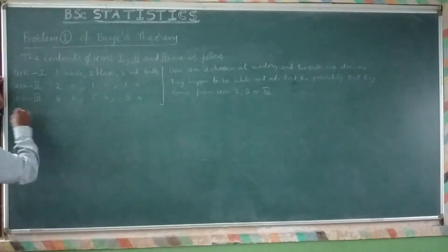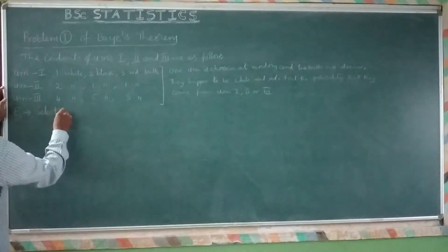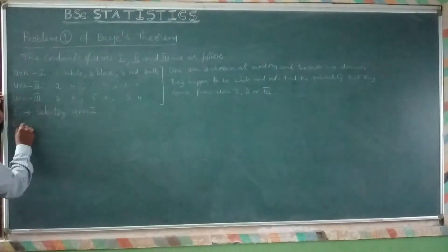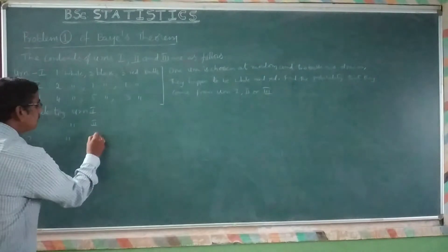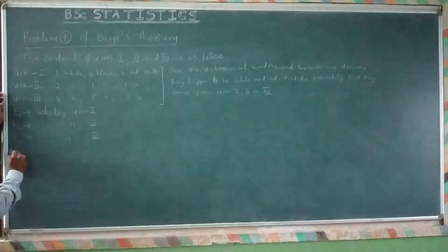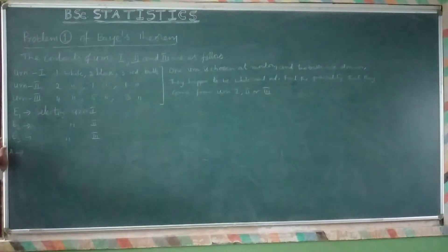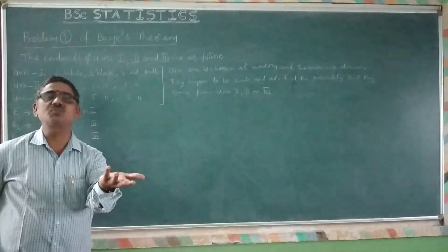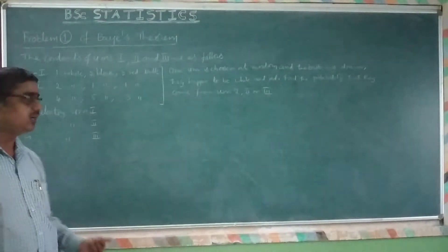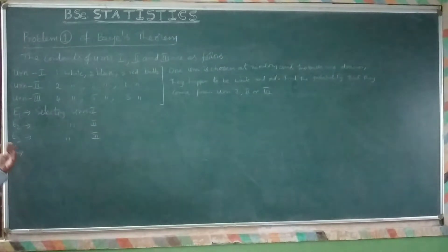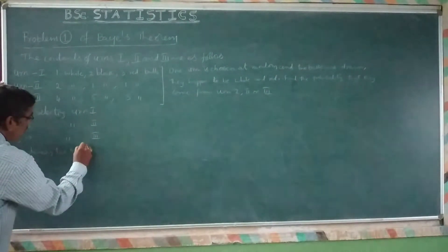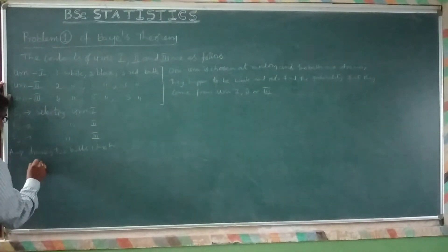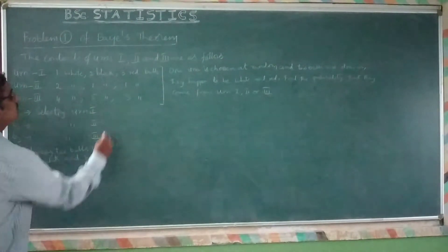First of all, what is E1? E1 is selecting Urn 1. What is E2? Selecting Urn 2. What is E3? Selecting Urn 3. And what is the arbitrary event A, which is common to all? Drawing two balls which are white and red. It may come from Urn 1, Urn 2, or Urn 3. Therefore it is a common event — it is called the arbitrary event, which is common to all three. So, A is the arbitrary event of drawing two balls which are white and red.